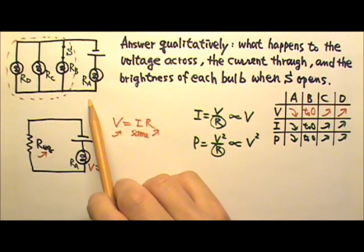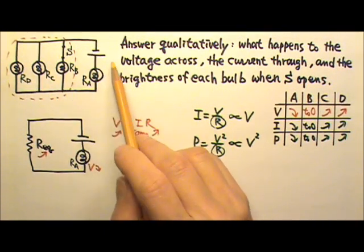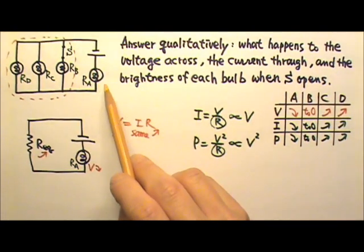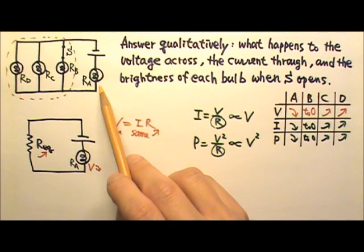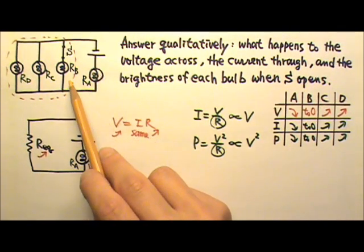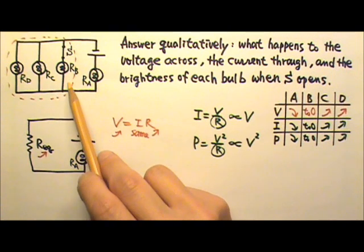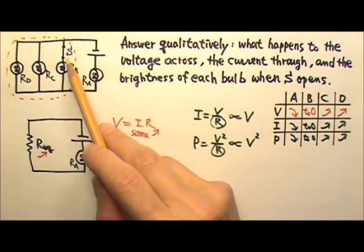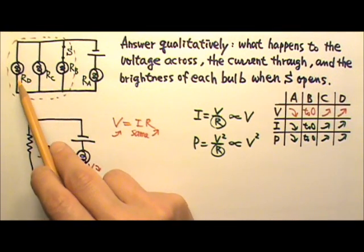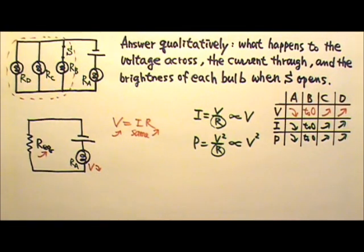This circuit is kind of like our household circuit. The power supply is like the 120 volts voltage we get. Bulb A is like the circuit breaker that is connected in series to the voltage source. Bulb B can be like a vacuum cleaner. When switch S opens, the vacuum cleaner turns off, and bulbs C and D can get a little bit brighter. Have you ever noticed that happening?